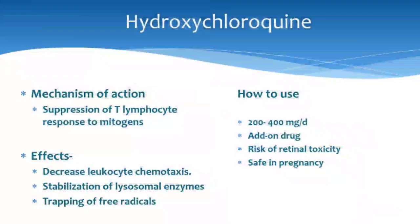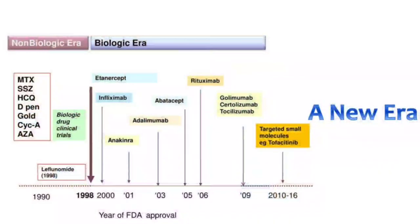Where methotrexate or leflunomide cannot be used — such as in pregnancy — sulfasalazine and hydroxychloroquine are better options. Hydroxychloroquine's mechanism involves suppression of T-lymphocyte response to mitogens, decreased glucoside chemotaxis, stabilization of lysosomal enzymes, and trapping of free radicals. Dosing is weight-based; start with 200–300 mg and can give 200 mg twice daily for three months, then reduce to 200 mg daily. It is an add-on drug; for mild cases only, it can be used as monotherapy, otherwise it's always part of combination therapy. It can cause retinal toxicity but is safe in pregnancy.